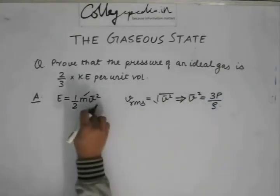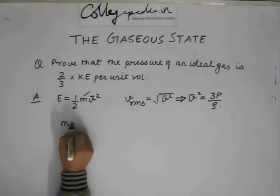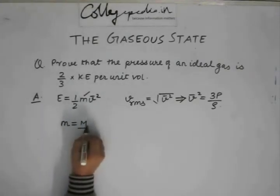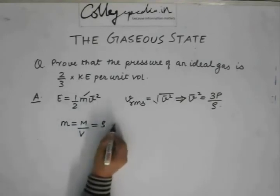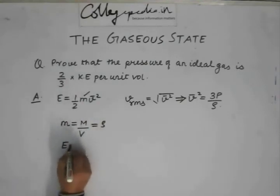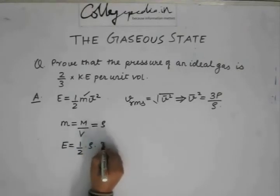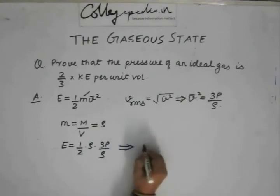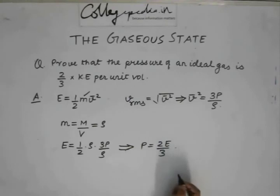If we put it back here and we know that M is the entire mass per unit volume, this becomes equal to the density. We know all this and we put it back in this equation, we see that E is equal to half into rho into 3 P by rho. From this, we can say that P is equal to 2 E by 3. This proves our statement.